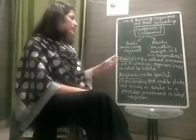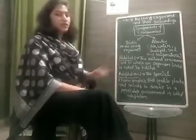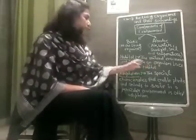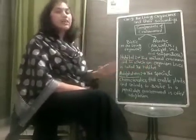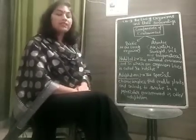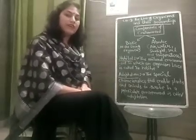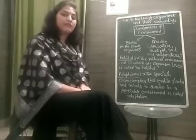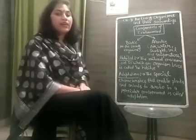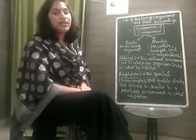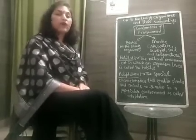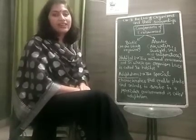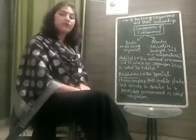Now, what is a habitat? The natural environment in which an organism lives is called its habitat. A habitat has all the environmental conditions that an organism may need to survive. For an animal, a habitat is able to provide food, water, shelter, and a mate to successfully reproduce.